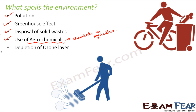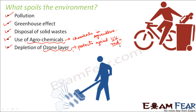Depletion of the ozone layer is another significant threat. The ozone layer is a protective layer surrounding the earth that protects it against harmful ultraviolet radiation coming from the sun. This ultraviolet radiation can cause deadly diseases like cancer. However, due mostly to human activities, the ozone layer is gradually thinning and vanishing from some portions, allowing UV radiation to enter and harm living organisms.